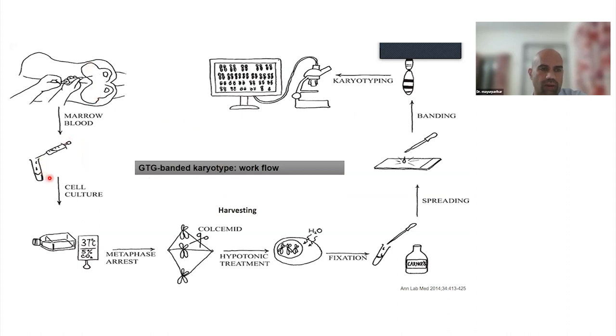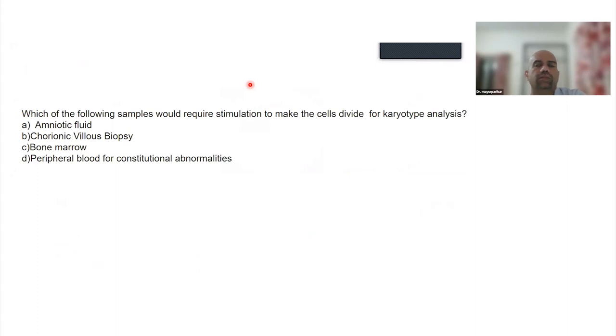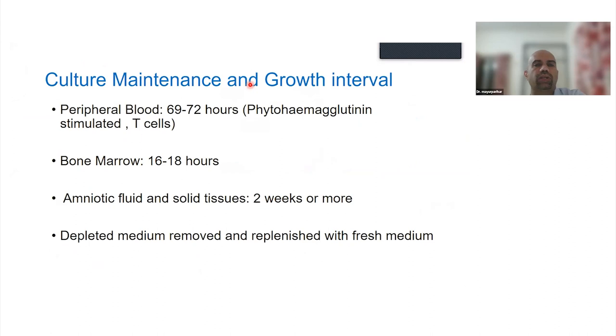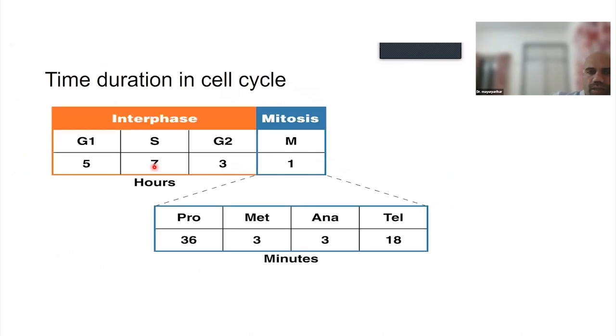This is what happens in conventional karyotyping. The marrow is taken, put in RPMI cell culture, and put in an incubator with 5% carbon dioxide. As the cells start dividing, the metaphase is arrested using colcemid. We add hypotonic solution, make slides, and those slides are stained or banded. For peripheral blood, it's a 69-hour culture. For bone marrow, we do 16 to 18-hour culture based on the cell cycle timing. We always do two cultures - one we add colcemid and put it for culture, the other we add colcemid the next day.